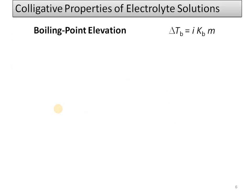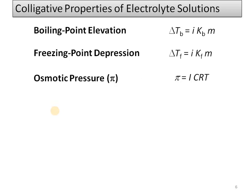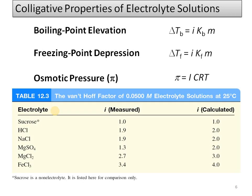For colligative properties of electrolytic solutions, all the formulas we have written earlier — elevation of boiling point, depression of freezing point, osmotic pressure, and relative lowering of vapor pressure — will be modified by multiplying with i. So: ΔTb = i·Kb·m, ΔTf = Kf·m·i, and π = i·C·R·T. Now, what is the difference between measured and calculated values?